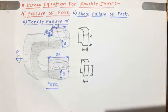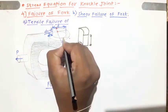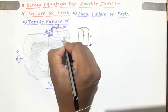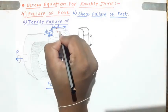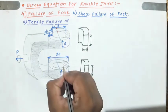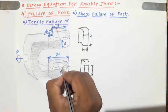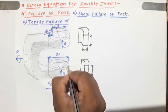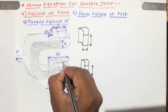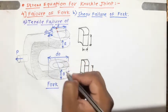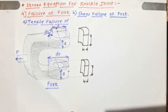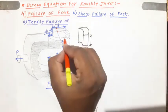This type of failure is called double shear failure because the shear failure takes place in two planes. For the top fork end, this is the first plane of failure and this is the second plane of failure. Similarly, for the bottom fork end, the failure takes place in two planes — a first plane and a second plane. That is why this is called double shear failure.